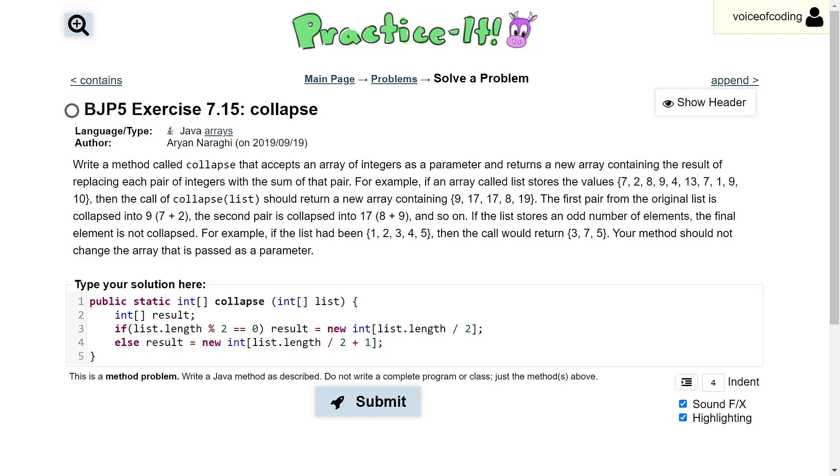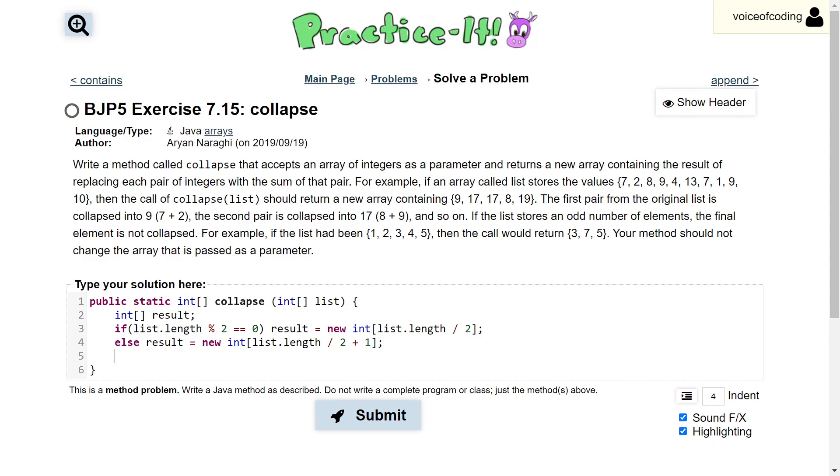which serves as an issue. Because remember, the problem reads that the final element is not collapsed, so we want to make sure to include that final element, which is why we do that plus 1.